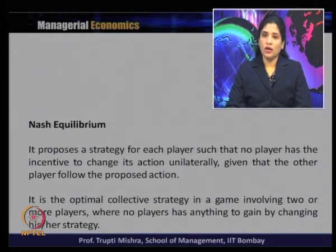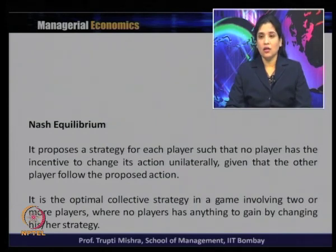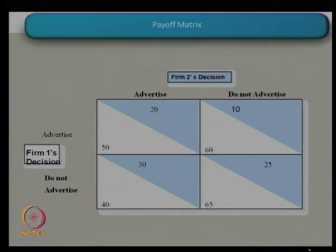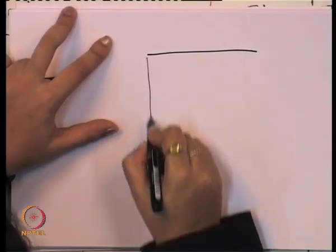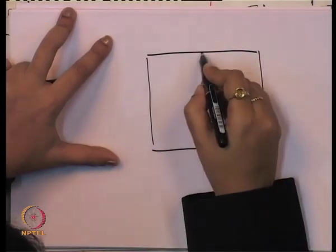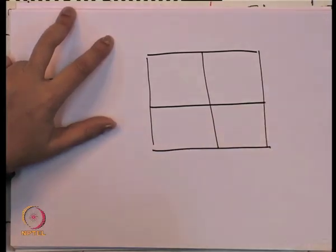This is the optimal collective strategy — the optimal strategy for both firms — beyond which, whatever the change, no player has anything to gain by changing strategy. We will take the same example to understand Nash equilibrium. There are two firms, firm 1 and firm 2, and it is a choice between them whether they should advertise or whether they should not advertise.